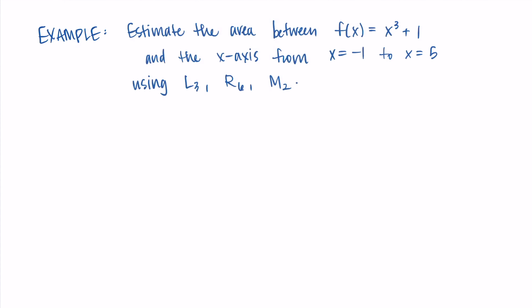In this video we are going to do an example of a Riemann sum problem — a left Riemann sum, a right Riemann sum, and a midpoint Riemann sum. We want to estimate the area between the curve f(x) = x³ + 1 and the x-axis from x = -1 to x = 5, using L3, R6, and M2. That subscript — the 3, the 6, and the 2 — represents how many rectangles we're using.